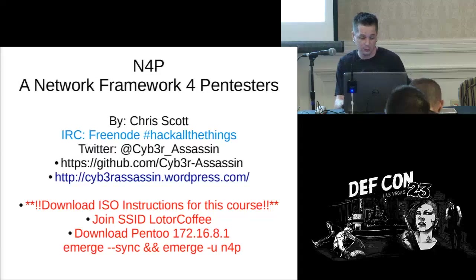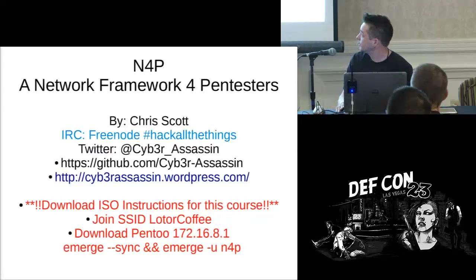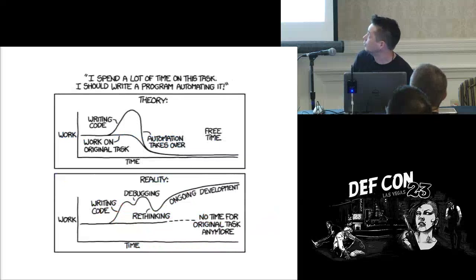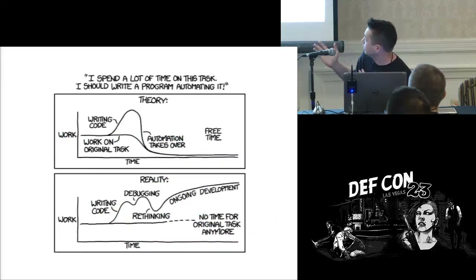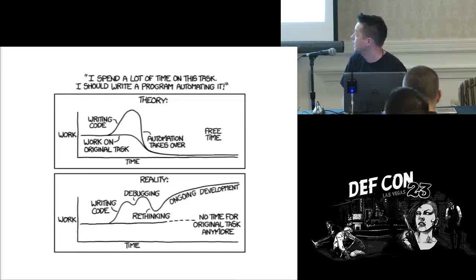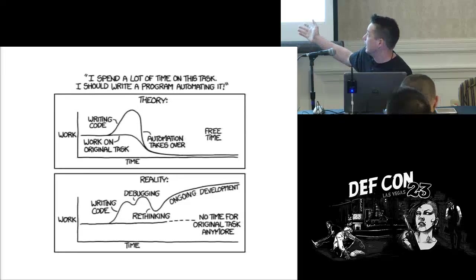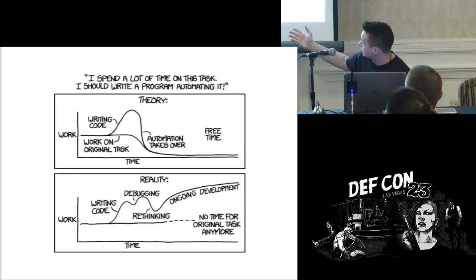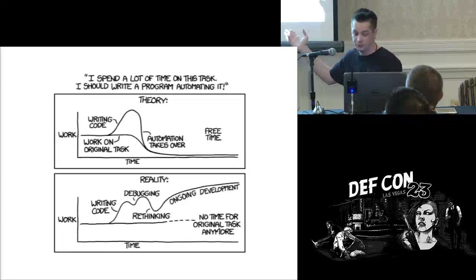I started this project and this is pretty much my theory of how it went: I start writing code, I automate process, I exfiltrate all kinds of great stuff and have extra free time to go snowboarding because it's all automated. The bottom is what really actually happened — a lot of bugs. Then it became an ongoing development. I've yet to go snowboarding or find any free time.